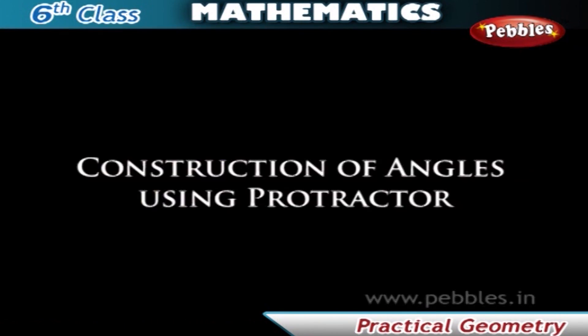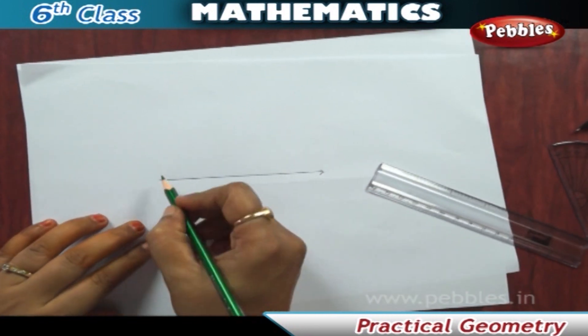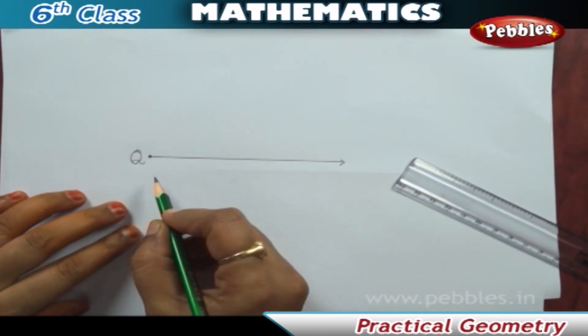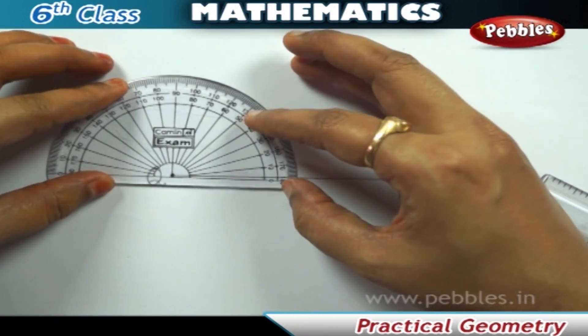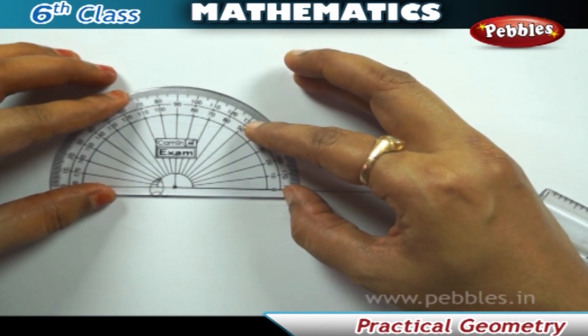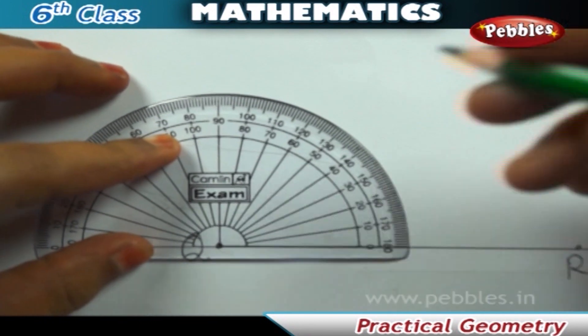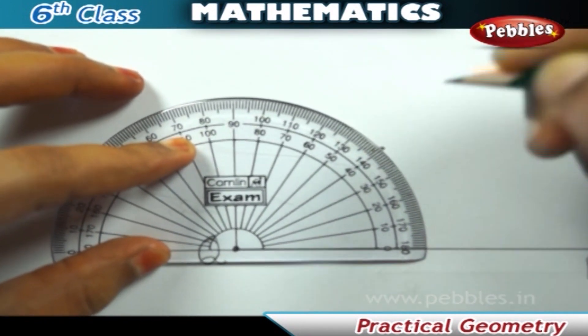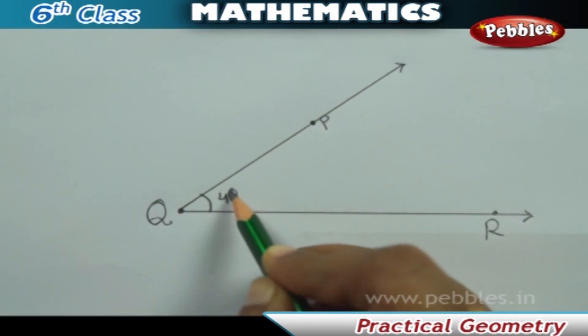Construction of angles using protractor. Let us construct angle PQR equal to 40 degrees. First, draw a ray QR of any length. Place the center point of the protractor at Q and the line aligned with the ray QR. Mark a point P at 40 degrees. Join QP. Angle RPQ is the required angle.